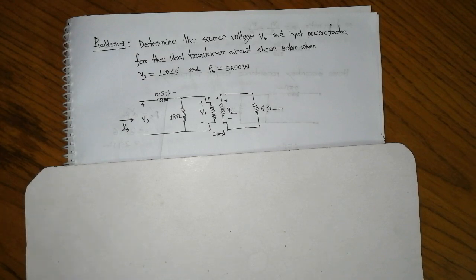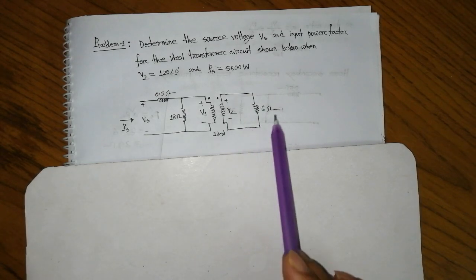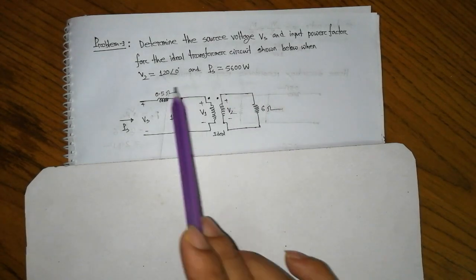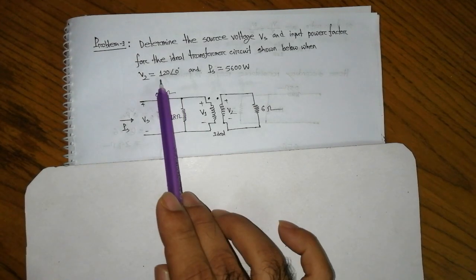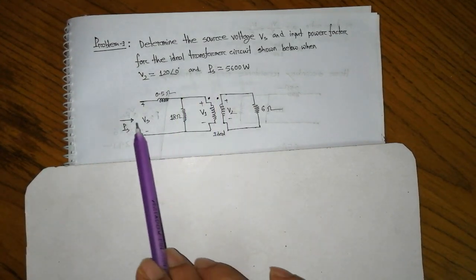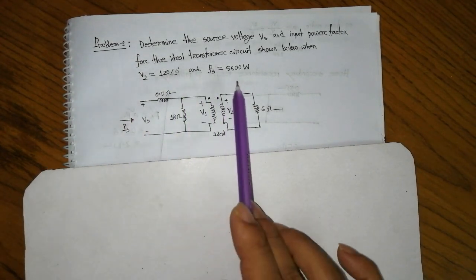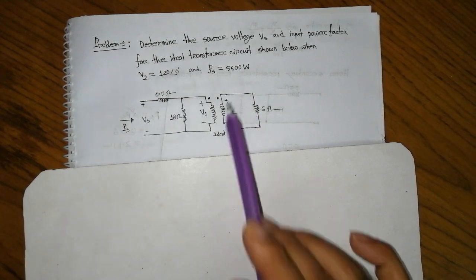Determine the source voltage Vs and input power factor for the ideal transformer. The circuit is shown below. When V2 is 120V and the supply power is 600W.